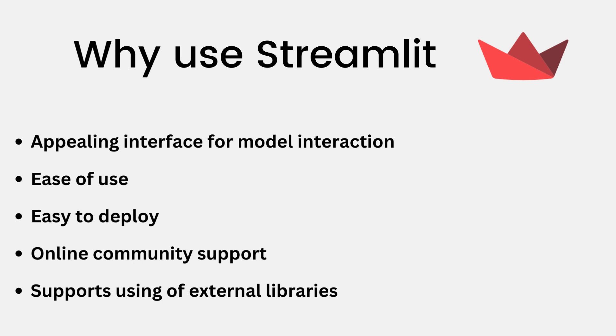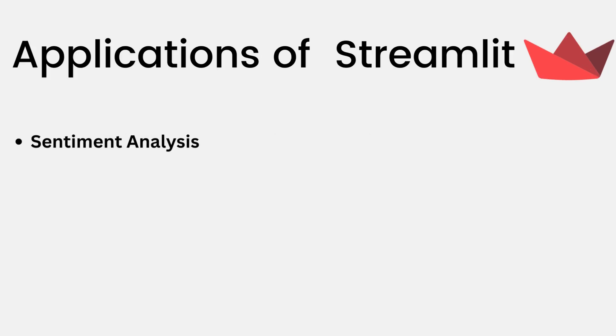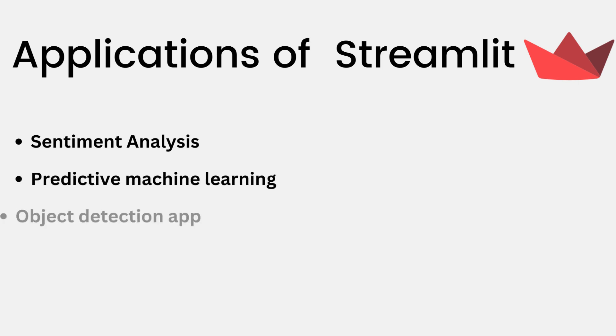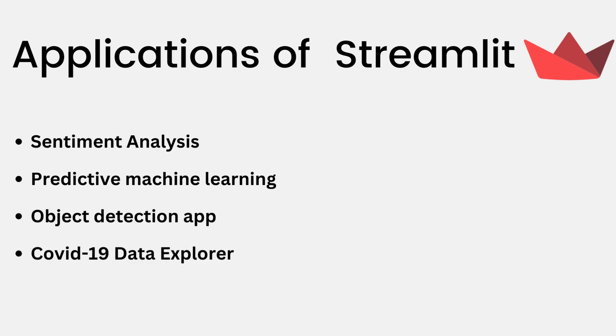Now let's look at some of the applications of Streamlit. We can use Streamlit for sentiment analysis apps, predictive machine learning, object detection applications, COVID-19 data exploration, and interactive data visualization. As we move on in this series, we're going to be building some of these projects, and you'll understand what I'm trying to convey.